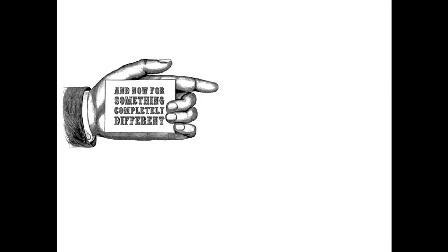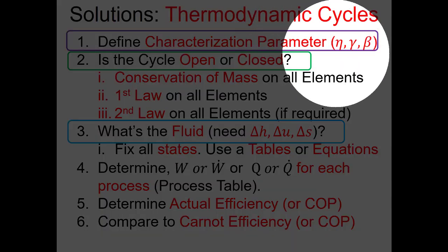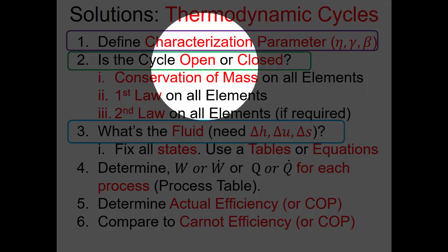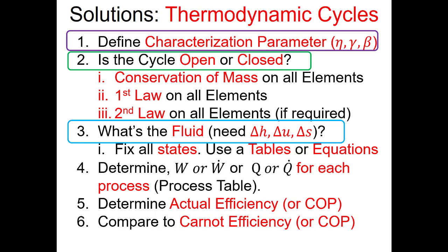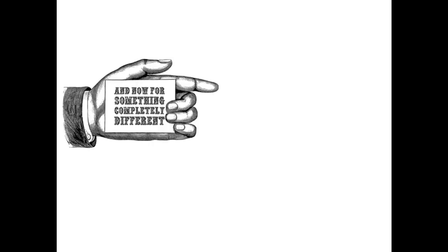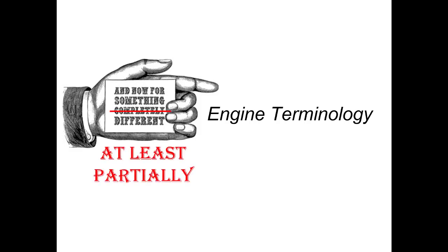For Rankine cycles: it's a heat engine (thermal efficiency), all processes are modeled as open, and the fluid is water bouncing across the vapor dome. Now we're moving to internal combustion engines, which are partly different. Even without a framework, someone might think ICEs are completely different from Rankine cycles — but there are important similarities in how we answer at least one of our three key questions.